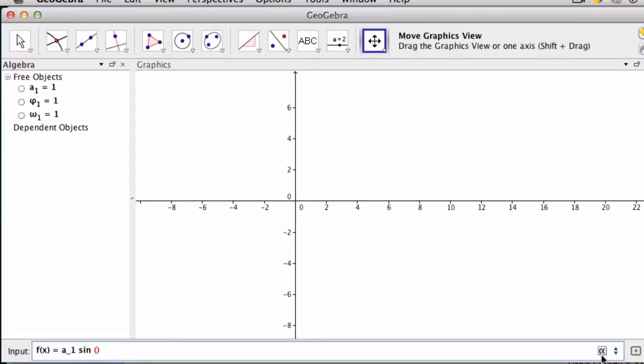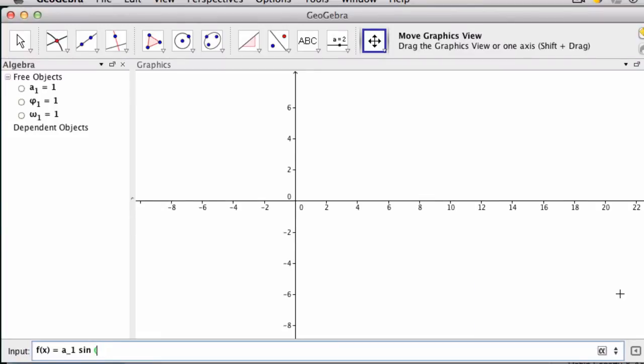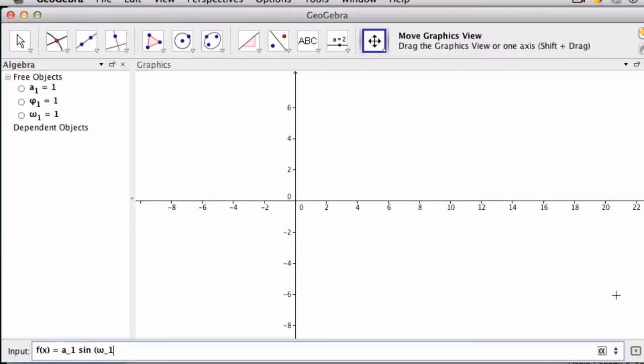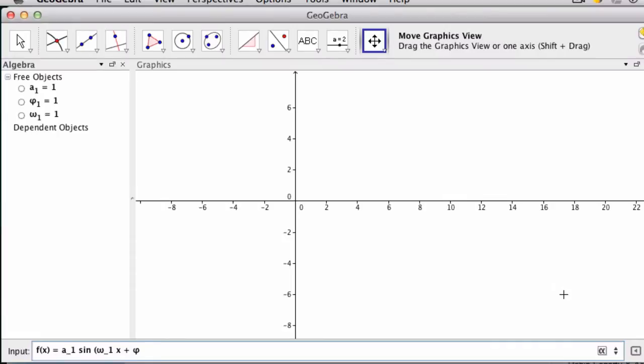So I'm going to use omega again, click my button over here, omega, oops, all that to go in parenthesis. Omega sub one times x, so space x, plus phi sub one. So I go over here, select phi sub one.